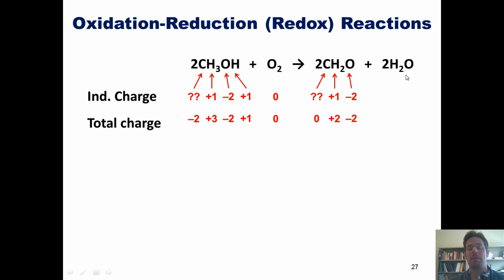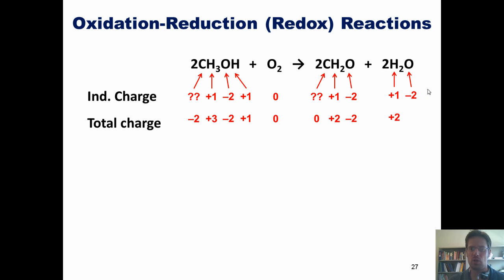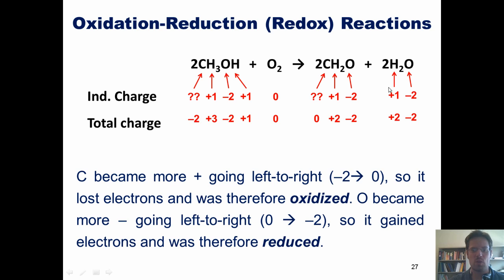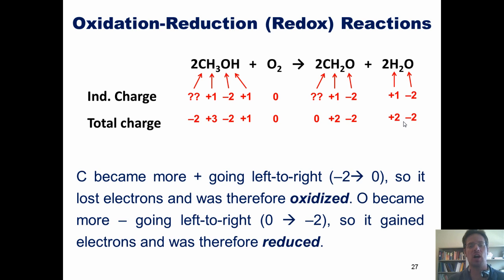Looking at the water molecule, by previous convention the hydrogens each get an oxidation number of plus one and oxygen of minus two. Because there are two hydrogens, their overall positive charge combined is plus two, and that of oxygen is minus two. Now we return to our original question: what got oxidized and what got reduced in this process? Carbon going from the left side to the right side of the equation became more positive — its oxidation number on the left was negative two and on the right was zero. Because it became more positive, it lost electrons and was therefore oxidized. In contrast, oxygen became more negative going from left to right — on the left its oxidation number was zero and on the right it was negative two. Oxygen therefore gained electrons and got reduced.